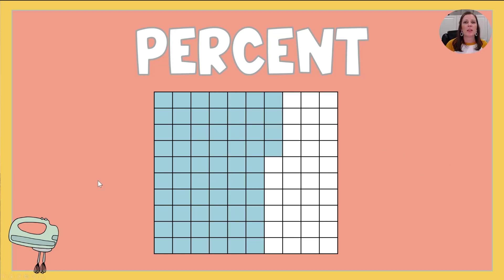Take a look at this one. This time we have one, two, three, four, five, six complete rows of 10 plus four more. So we have 64 percent. What about this one? There's only three colored in. Three out of 100 is simply three percent.